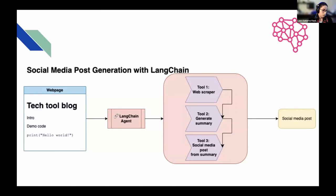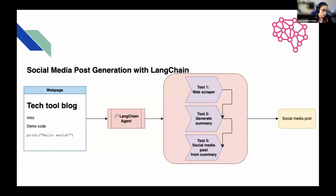This is what it looks like: I have one tech tool blog post, I set up a LangChain agent with my tools. The web scraper was the first step, the summary was the next step, and then the social media post from the summary was the last step. The end result was a social media post. I'll have some time to show a demo at the end so I'll show you what that looks like in real life.